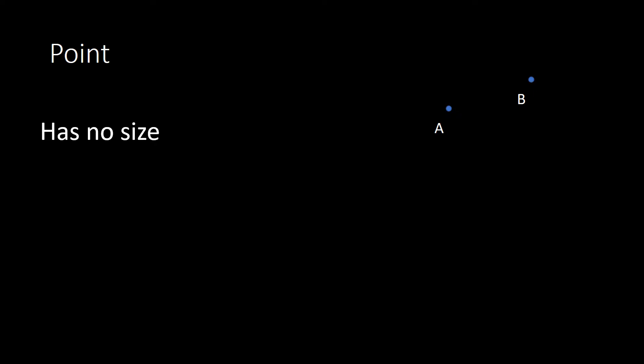Let's look at a point. I think most people understand the concept of a point, but we're going to get a few specific details about points that you may not necessarily know. A point is just like a dot. We see on the right we have point A and point B. Describing a point, it technically has no size. When you draw this on a piece of paper or when you see it represented, yes, there is a physical size to it, but technically, by our description of a point, it has no size.